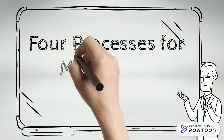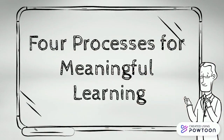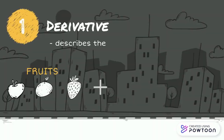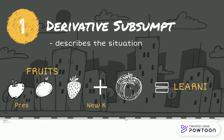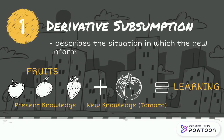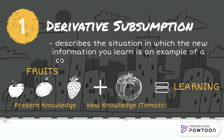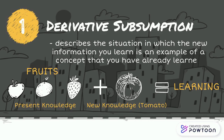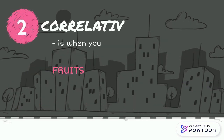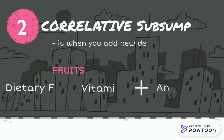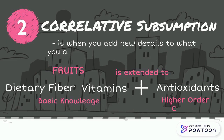Let us proceed to the four processes for meaningful learning. First, derivative subsumption — it describes the situation in which the new information you learn is an example of a concept that you have already learned. Second, correlative subsumption — it is when you add new details to what you already know, usually a higher-order concept.